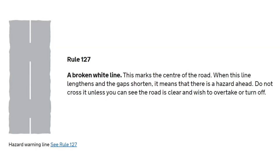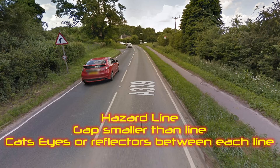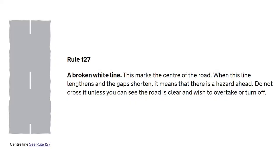Here we have lots of different white lines. You get a hazard line, where the gap is smaller than the lines. The longer the line, the more hazardous the upcoming road is — maybe you're approaching a field where tractors can be coming out in the countryside. You also get cat's eyes between every white line. Then you get a lane divider or centre white line, where the white line is shorter than the gap, and cat's eyes are present.